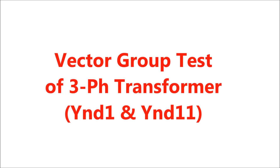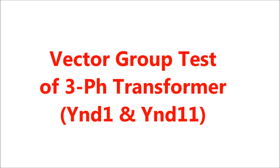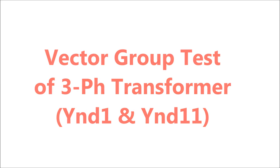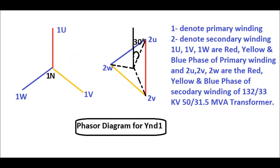This video covers the vector group test of three-phase transformers YND1 and YND11. The phasor diagram for the YND1 power transformer is shown in this figure. Here, '1' denotes the primary winding or HV winding of a power transformer, and '2' denotes the secondary winding or LV winding of the power transformer. 1U, 1V, and 1W in capital letters represent the red, yellow, and blue phases respectively.